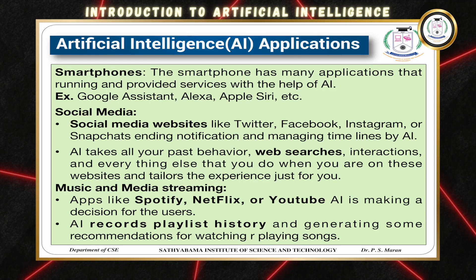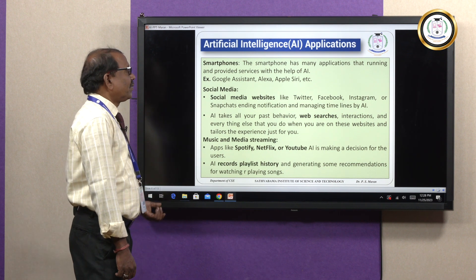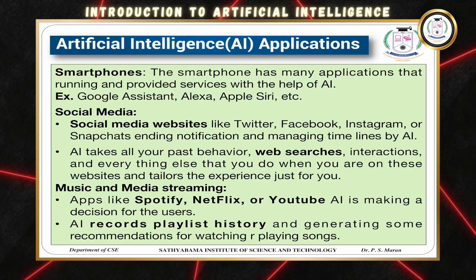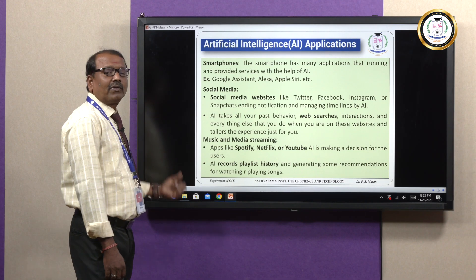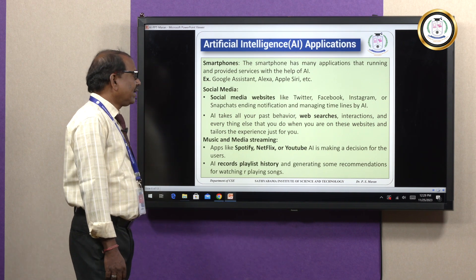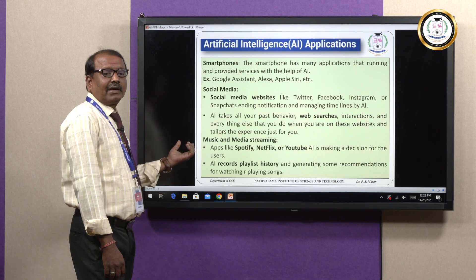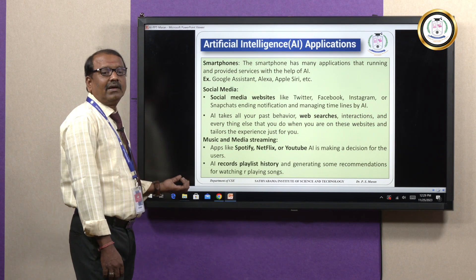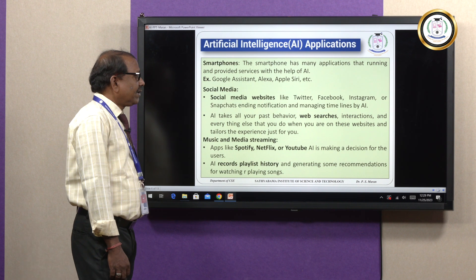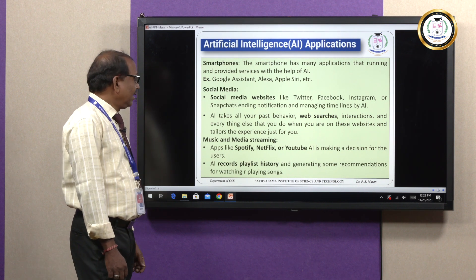For smartphones, many applications run on many operating systems with the help of AI — for example, Google Assistant, Alexa, Apple Siri, etc. These are the smartphone devices that use artificial intelligence. In social media, artificial intelligence is used mostly in Twitter, Facebook, Instagram, and Snapchat with management of timelines through artificial intelligence.